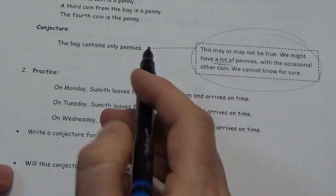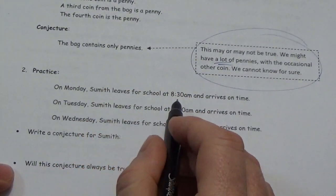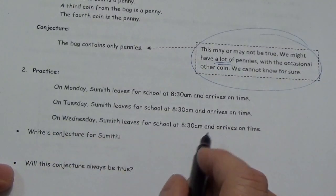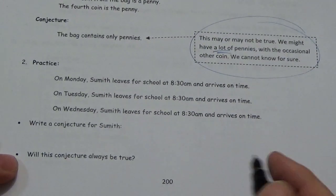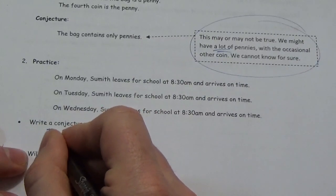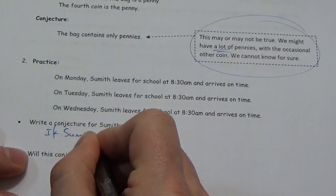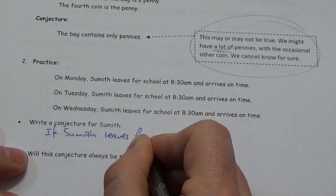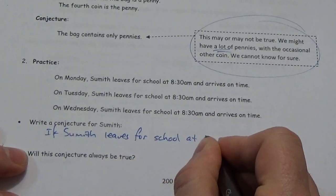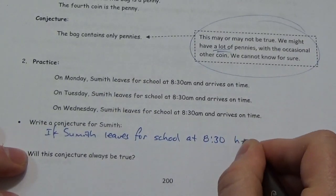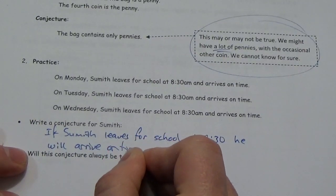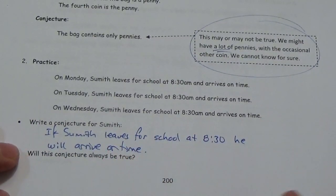It says, on Monday, Smith leaves for school at 8:30 and arrives on time. On Tuesday, Smith leaves for school at 8:30 and arrives on time. On Wednesday, Smith leaves for school at 8:30 and arrives on time. Okay, so what conjecture we write for Smith? If Smith leaves for school at 8:30, he will arrive on time. That's my guess.